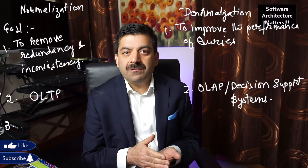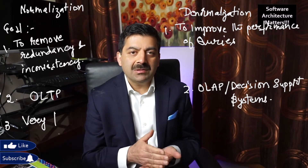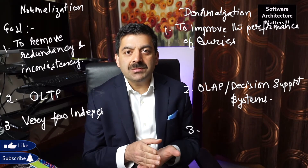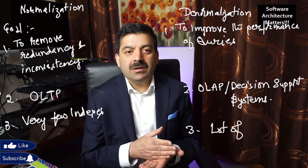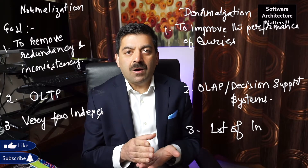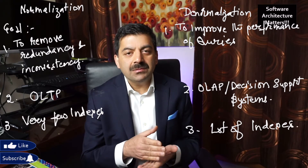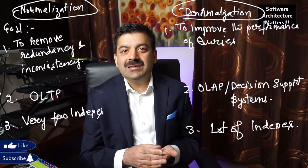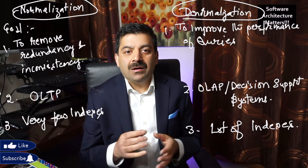Normalization is used mainly for OLTP (online transaction processing) systems, whereas denormalization is more used for decision support systems, business intelligence tools, and OLAP (online analytic processing) databases. Generally, OLTP databases have very few indexes because too many indexes slow down insert, update, and delete processing. Whereas in OLAP systems, where retrieval of data is very important, you will have many more indexes.